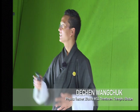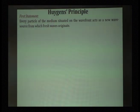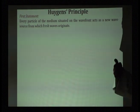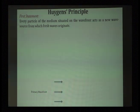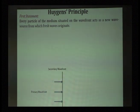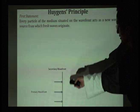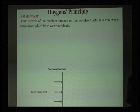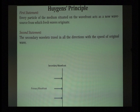Now let us look at Huygens principle, which has two important significances: it explains the propagation of wave in the medium, and it can tell the position of the wave. The first statement says: every particle of the medium situated on the wave front acts as a new wave source from which fresh waves originate. Let us assume light is coming from an unknown source — we consider that as the primary wave front. A line drawn cutting all these rays is called the secondary wave front, and this secondary wave front becomes a new source of light. The second statement says: the secondary wavelets travel in all directions with the speed of the original wave.